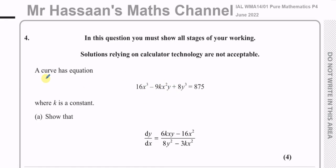We have this curve with equation 16x² minus 9kx²y plus 8y³ equals 875, where k is a constant. We've got to show that dy/dx is given by the expression (6kxy minus 16x²) over (8y² minus 3kx²).